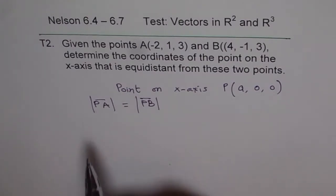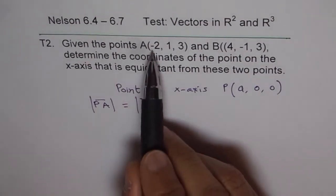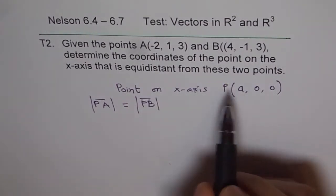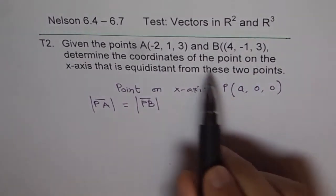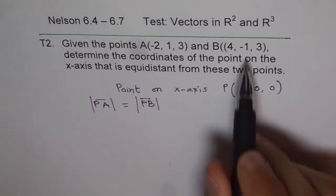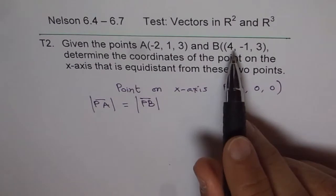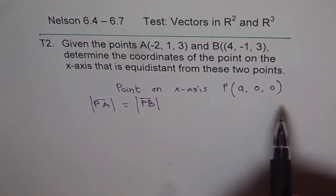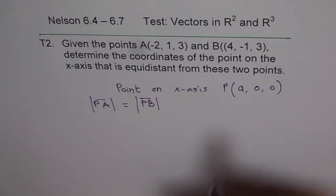Now, what is P to A? P to A will be minus 2 minus A, 1 minus 0, 3 minus 0, like that. And similarly, P to B will be difference of their corresponding direction numbers. And equate the two direction numbers and get your answer, correct? So that is how this should be done.